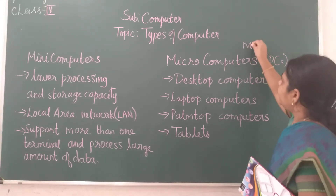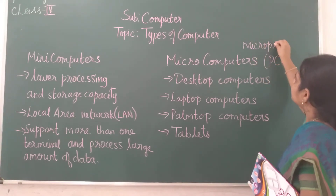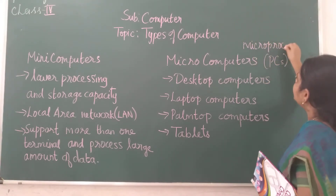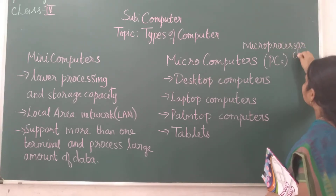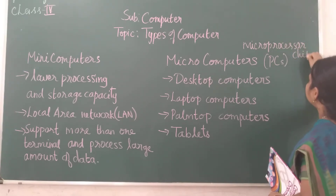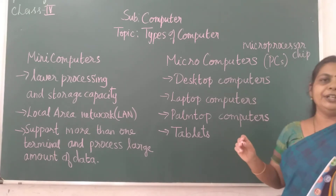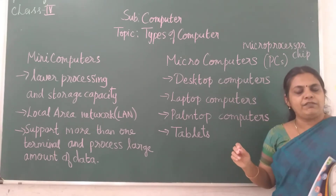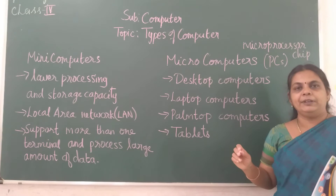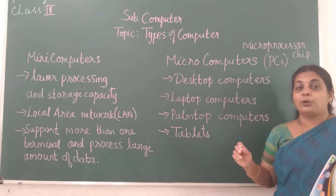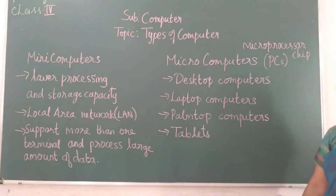So it uses a microprocessor chip, children. The microprocessor chip does all the work. So nowadays when you go and buy a computer, you will see something like Intel i5 quad core — that is the processor. This is what you have to look for, children.